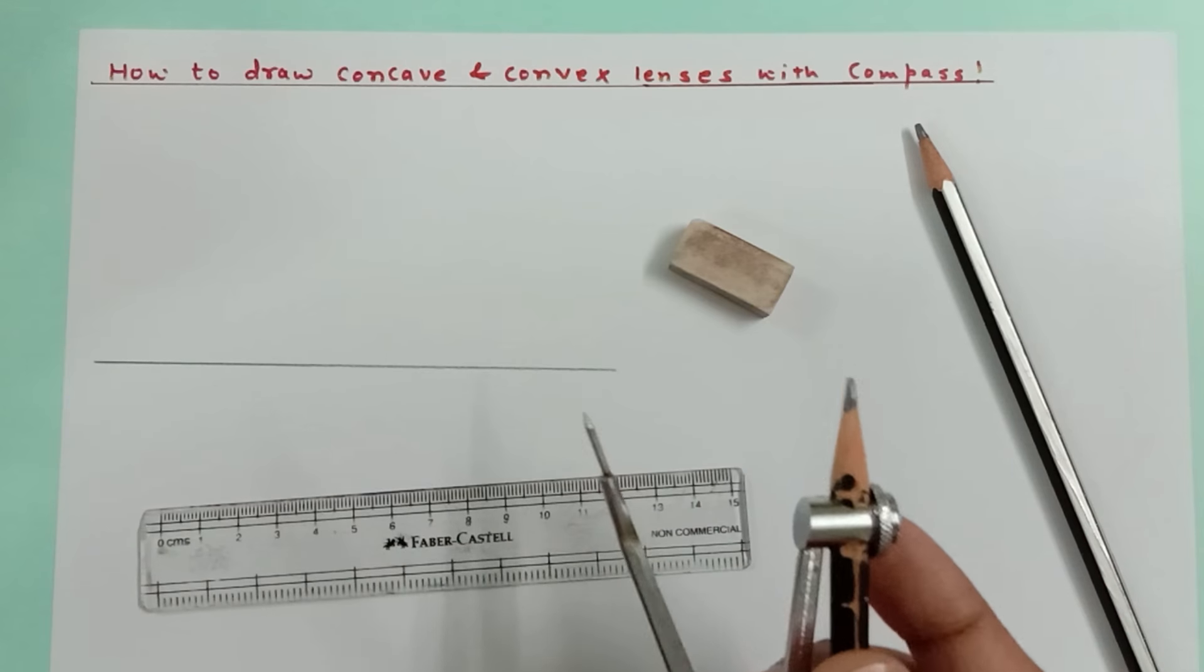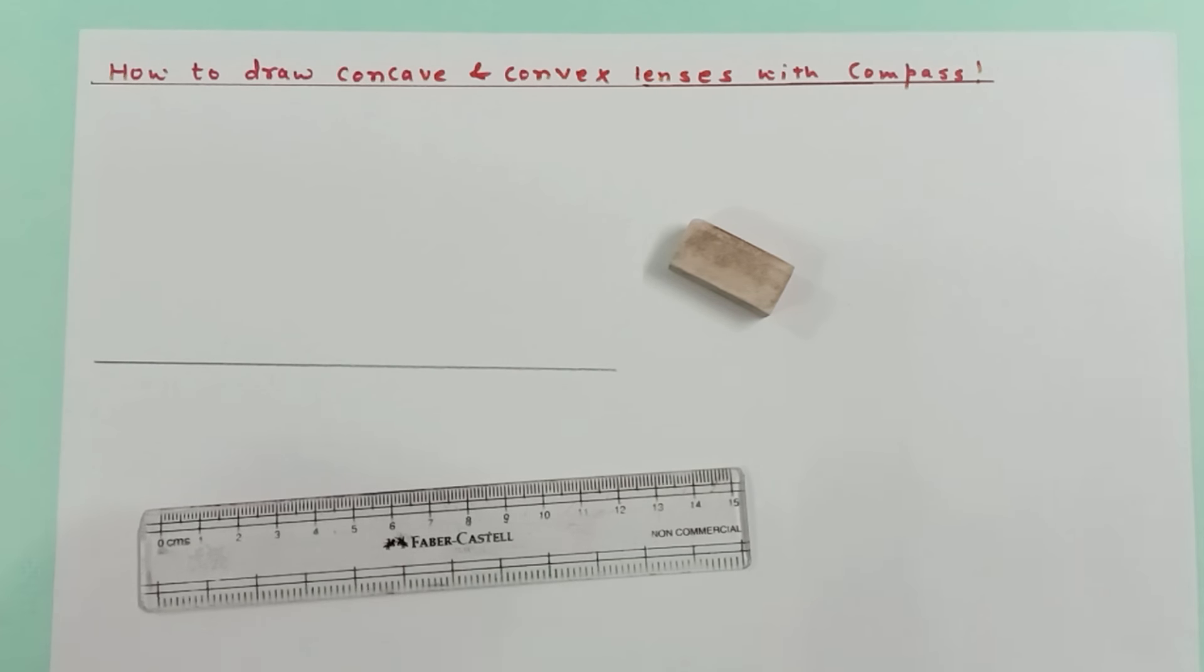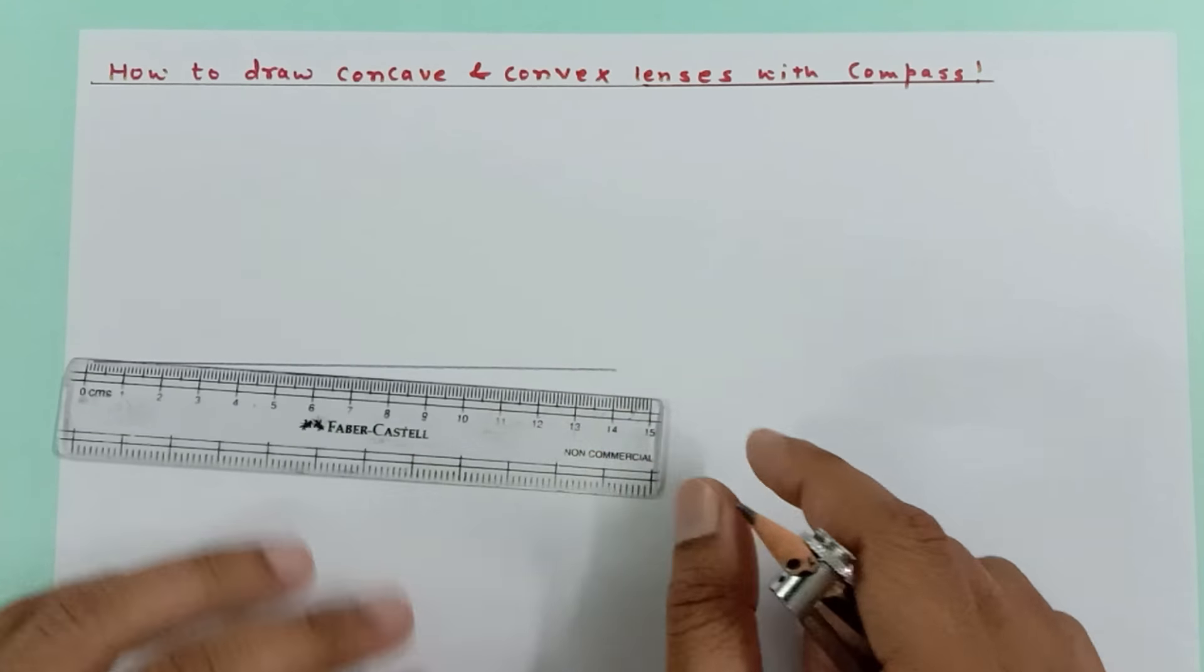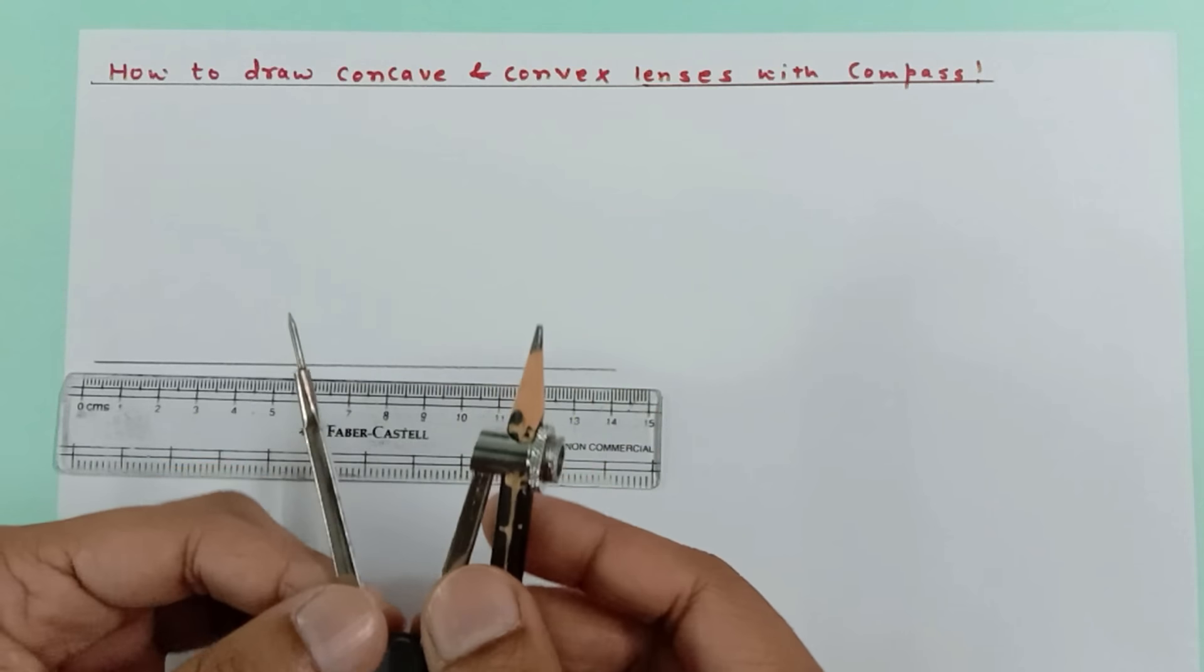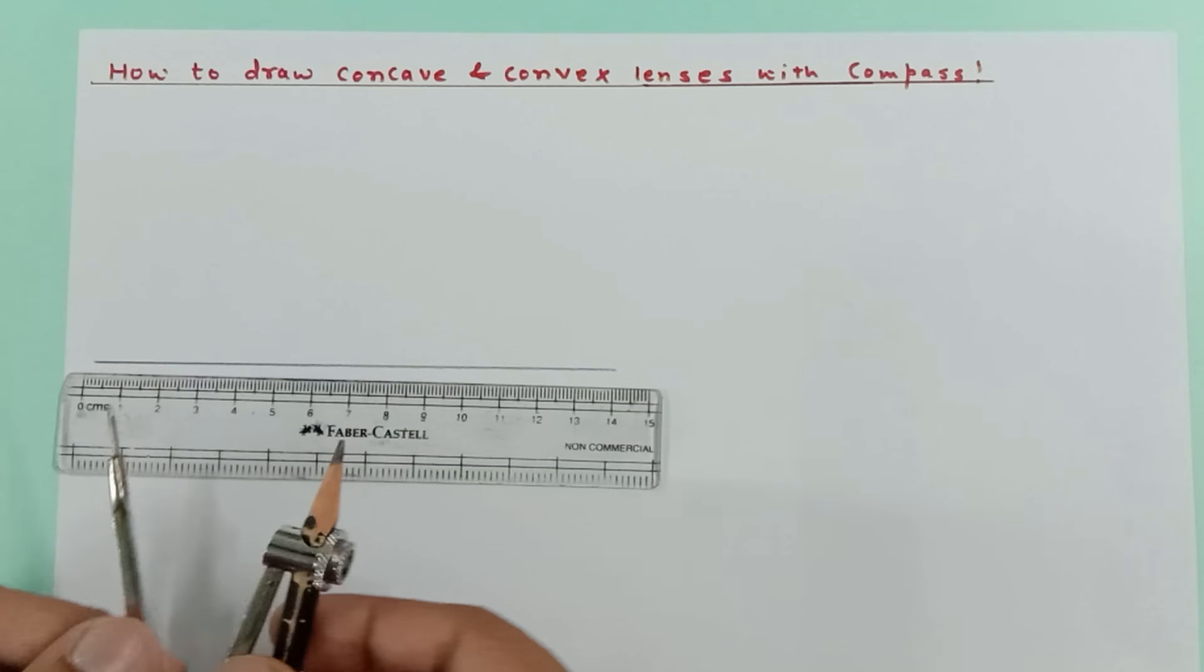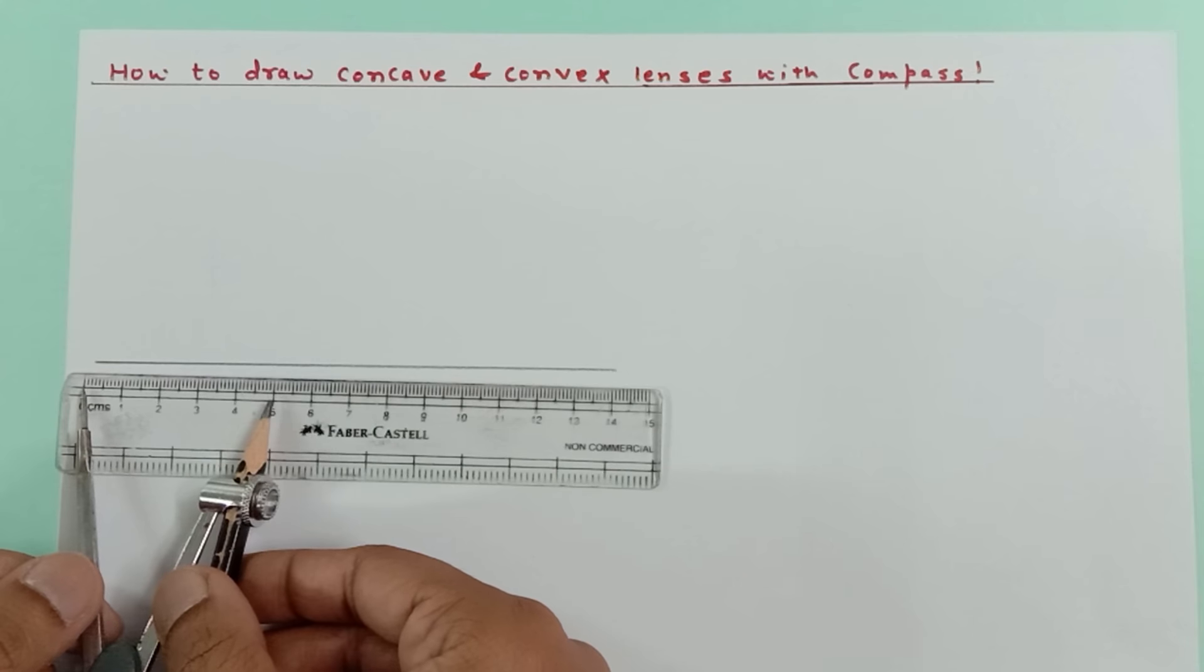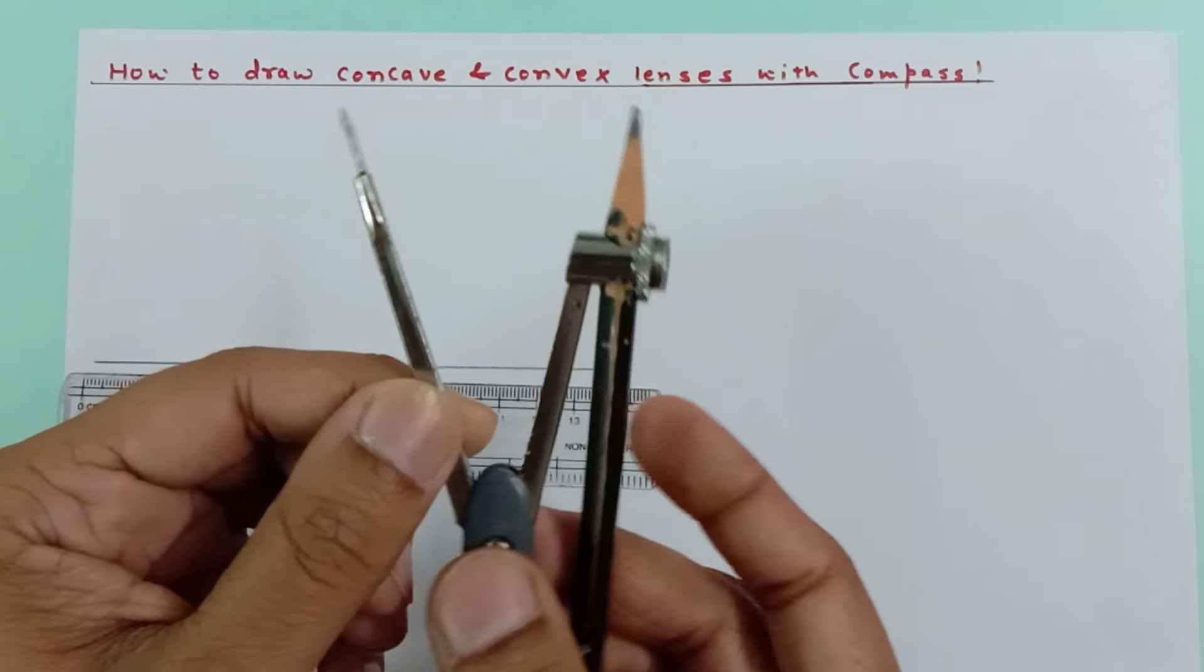So I'm going to guide you how to draw concave and convex lenses. First of all, I'm going to show you how to draw a convex lens. For that, you need to draw a straight line of any length. Now select any arbitrary distance - I have kept the distance as 5 centimeters.